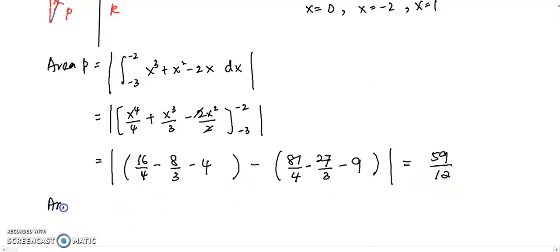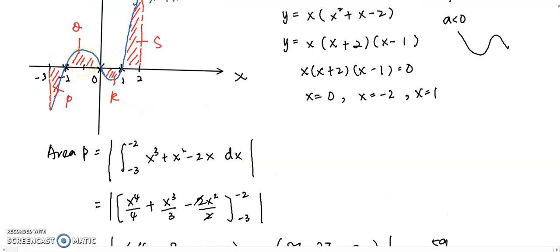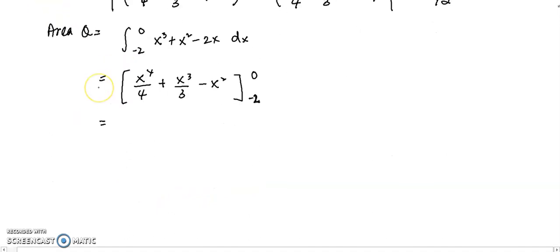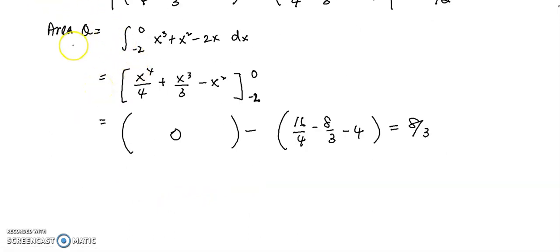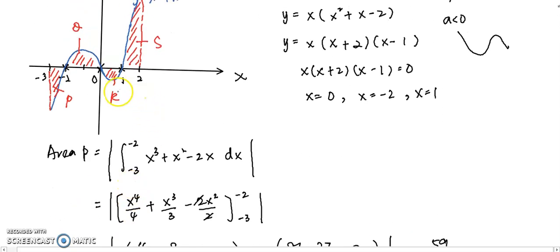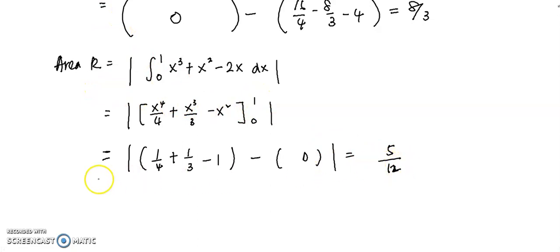For area Q, the region is above the x-axis, so no modulus is needed. Integrating from −2 to 0, we get area Q = 8/3. For area R, which is below the x-axis, we apply modulus and integrate from 0 to 1. Substituting the upper and lower limits, we get area R = 5/12.